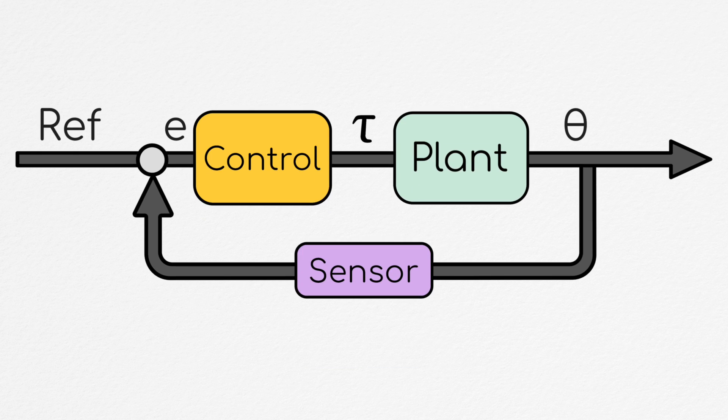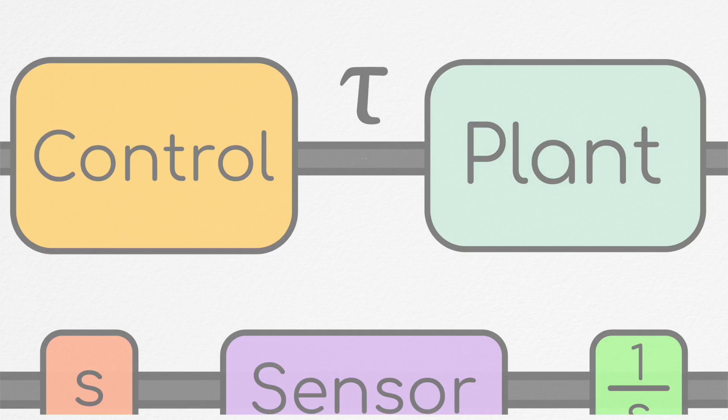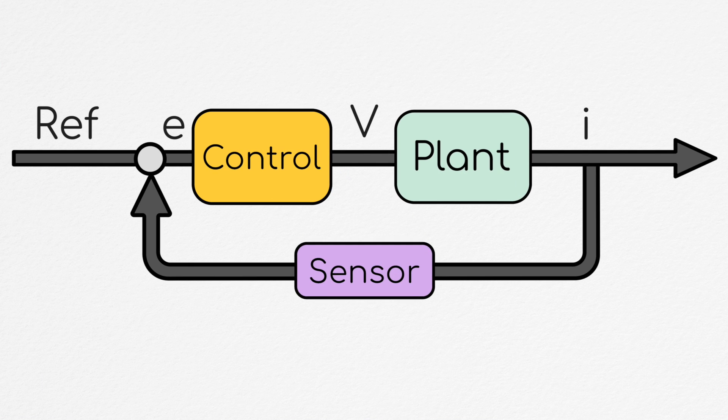So now we have a way to control our system's position or velocity via an input torque. But, as we talked about several episodes ago, we still have an issue. We don't have a way of directly dictating our motor's torque application. Instead, we're going to have to make a nested control loop, which uses a value we can control, voltage duty cycle, to drive the current running through the system and thus control the torque.